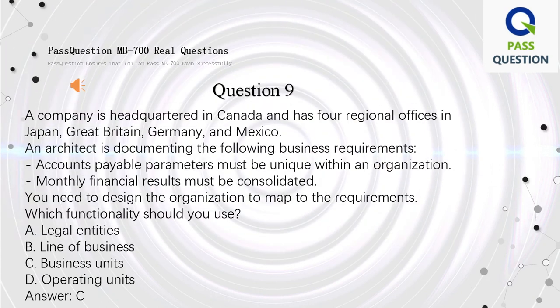Question 9: A company is headquartered in Canada and has four regional offices in Japan, Great Britain, Germany, and Mexico. An architect is documenting the following business requirements: accounts payable parameters must be unique within an organization, and monthly financial results must be consolidated. You need to design the organization to map to the requirements. Which functionality should you use? A: Legal entities. B: Line of business. C: Business units. D: Operating units. Answer: C.